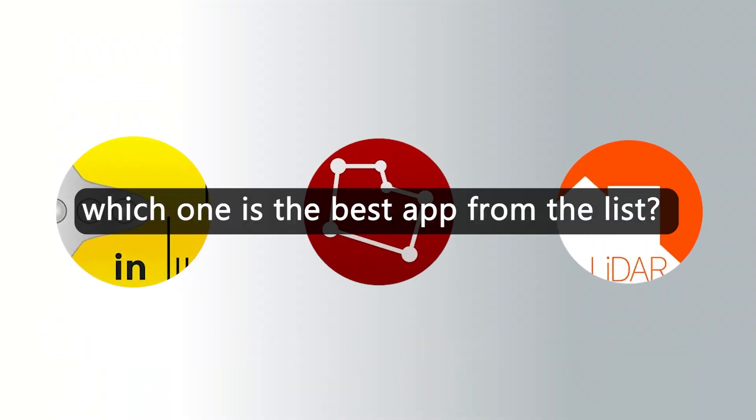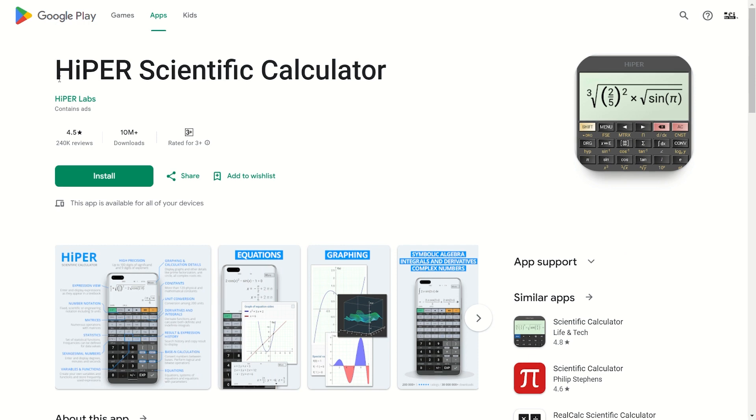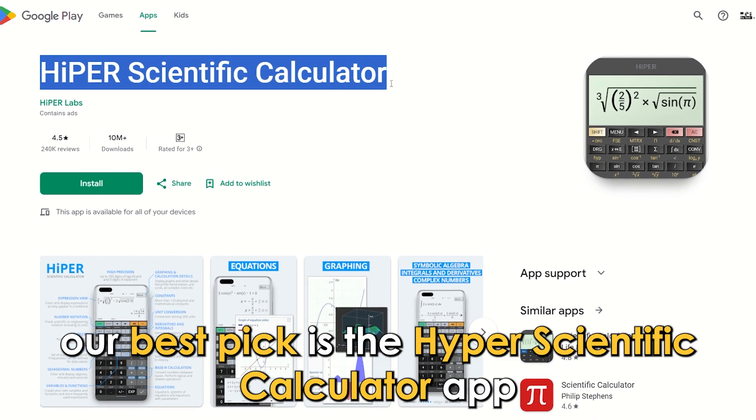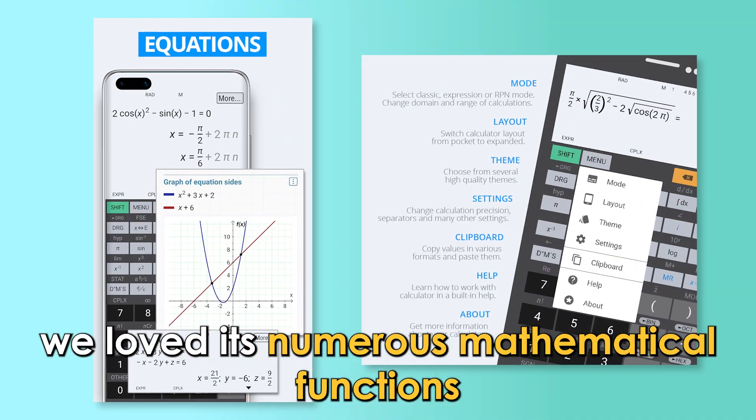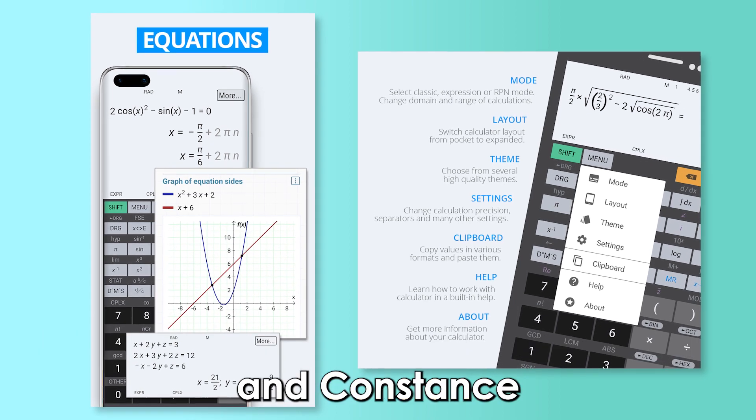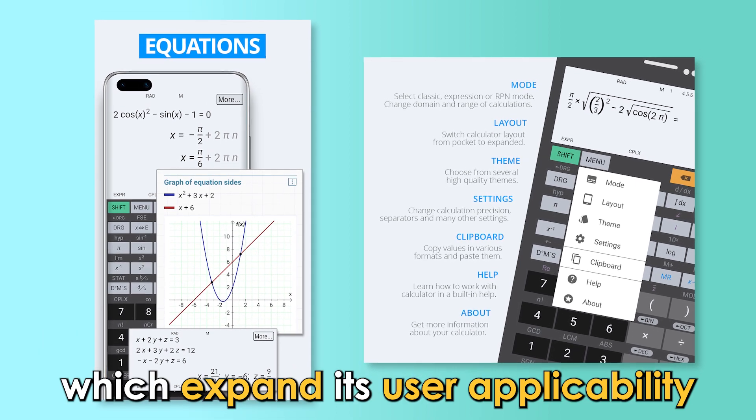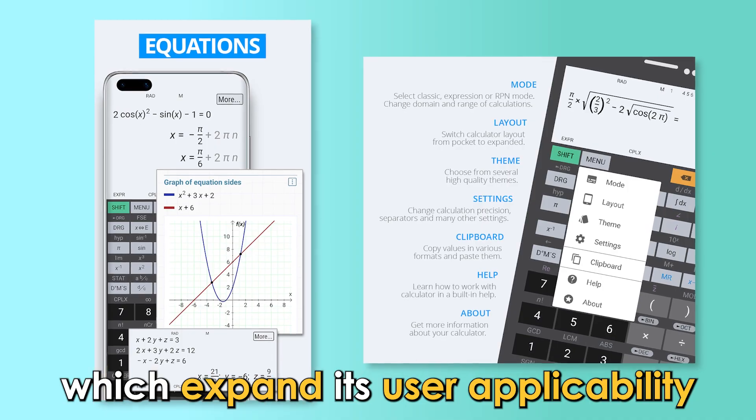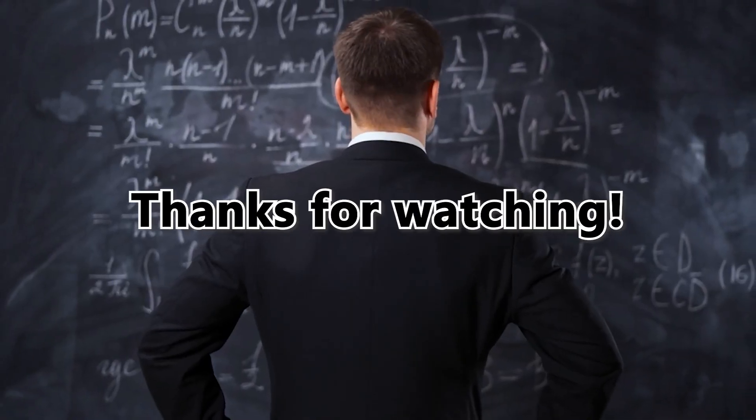So, which one is the best app from the list? Our best pick is the Hyper Scientific Calculator App. We loved its numerous mathematical functions and constants which expand its user applicability. Thanks for watching. Till next time.